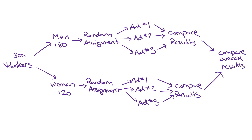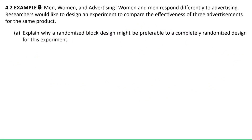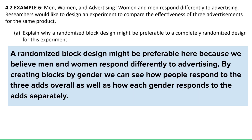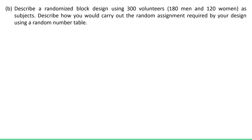Let's write this up as a paragraph. For Part A, we want to explain why a randomized block design might be preferable to a completely randomized design for this experiment. A randomized block design might be preferable here because we believe men and women respond differently to advertising. By creating blocks by gender, we can see how people respond to the three ads overall as well as how each gender responds to each of the ads separately. Part B: describe a randomized block design using 300 volunteers — 180 men and 120 women as subjects.